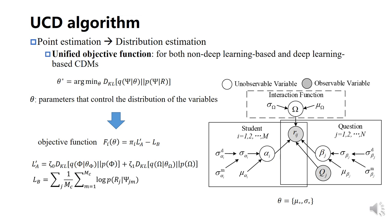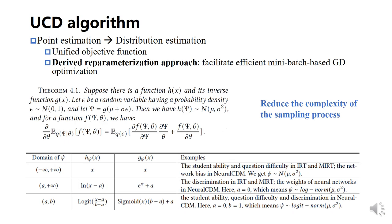To address these challenges, we change the point estimation of parameters to distribution estimation. This is an overview of our UCD algorithm as a graphical model, based on which we propose a unified objective function for both non-deep learning and deep learning-based CDMs. We then introduce a re-parameterization approach to facilitate efficient mini-batch-based gradient descending optimization, derived from the vanilla approach to reduce the complexity of the sampling process.